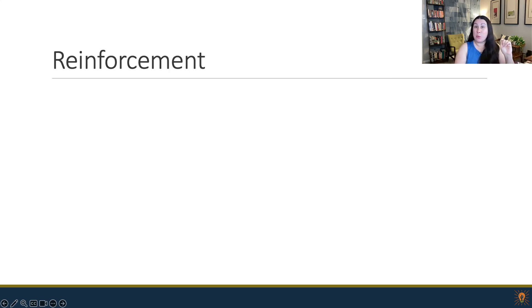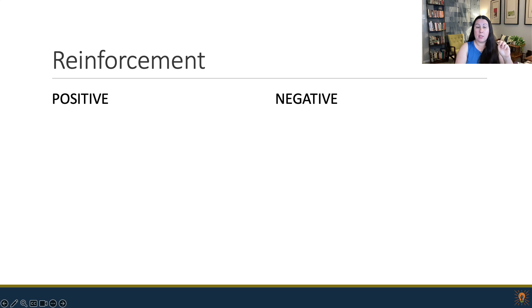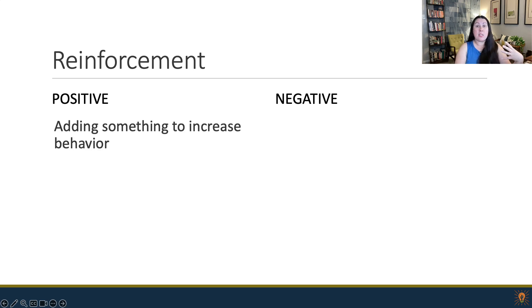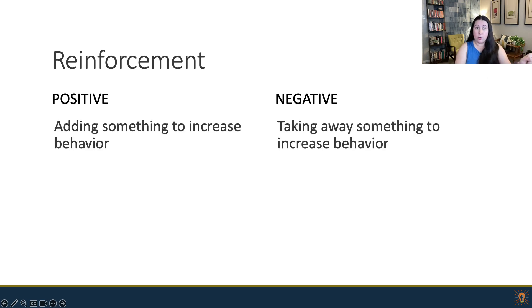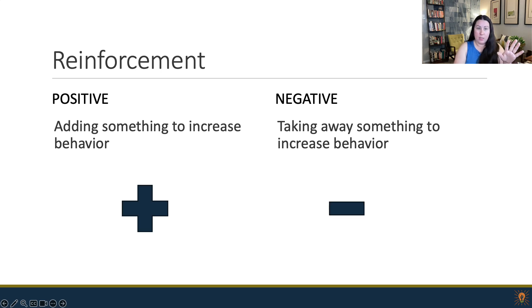That leads us to reinforcement, which is a kind of stimulus. There are two kinds of reinforcement: positive and negative. Same thing for punishment — there's positive and negative. But positive and negative doesn't necessarily mean good or bad. Positive is adding something to increase a behavior. Negative is taking something away to increase a behavior. That might sound a little counterintuitive, but positive and negative don't necessarily mean good or bad.